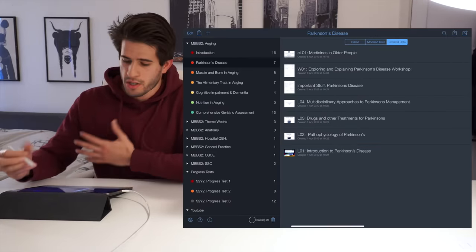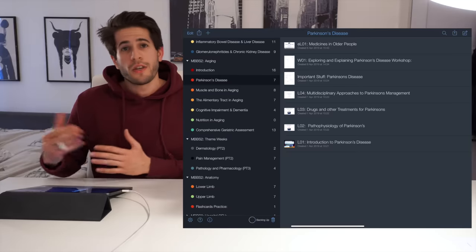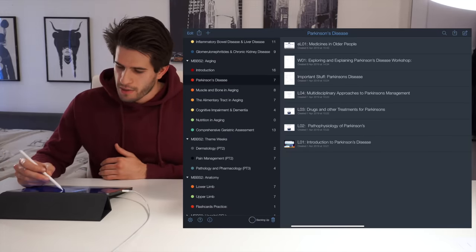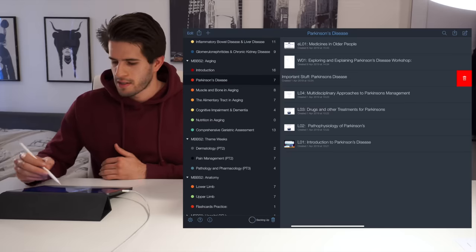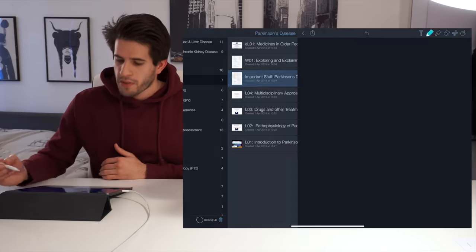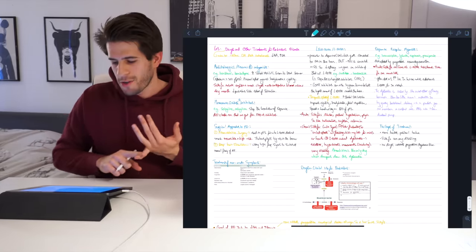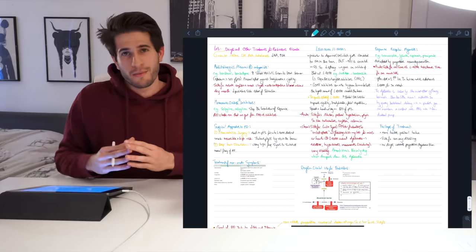I prefer to make a separate document which I call important stuff. So for each one of these subjects I'll have a note called important stuff. So for example here we have important stuff Parkinson's disease. If you guys click on that you'll see that it has the notes for each one of the lectures, tutorials and workshops and e-learning modules that I have worked on for that subject.